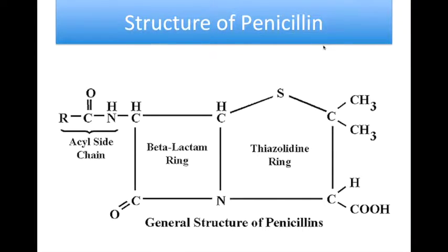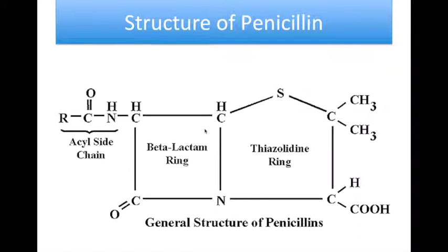The structure of penicillin: all penicillins contain a thiazolidine ring, which is a five-membered nitrogen-saturated ring. Attached to it is a carboxylic acid, which is usually ionized and administered as sodium or potassium salt. It is also thought that the activity is reduced when it is modified into an alcohol or ester. Another part is the sulfur, which is usual but not essential. Attached to the thiazolidine ring is the beta-lactam ring.